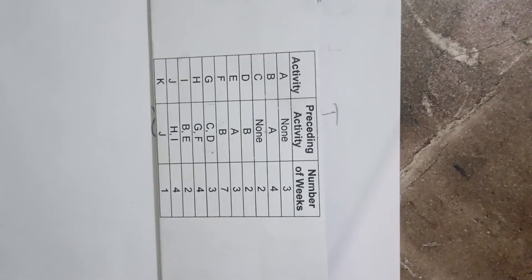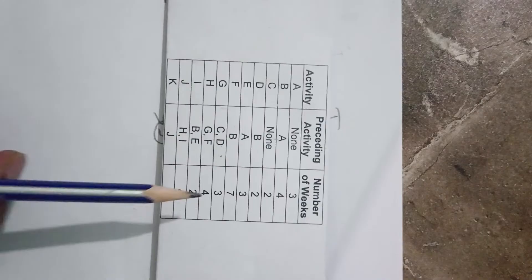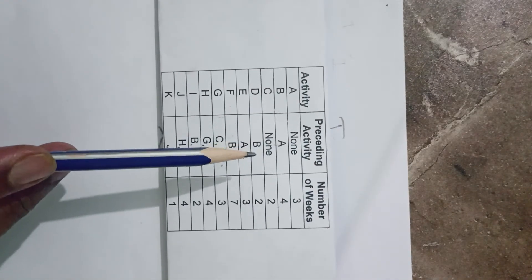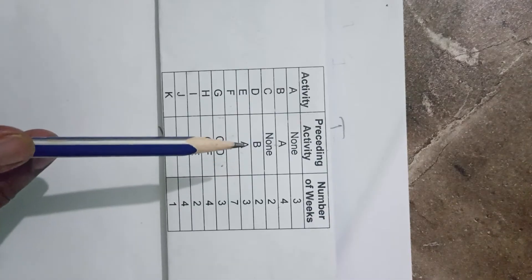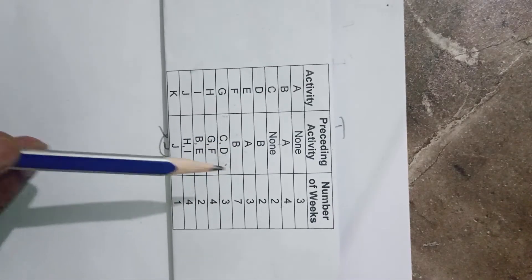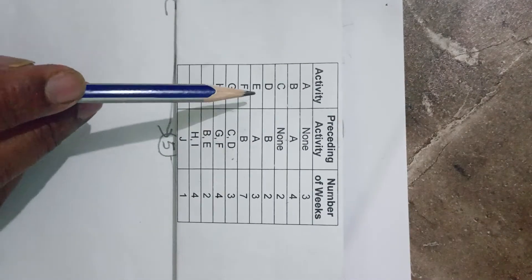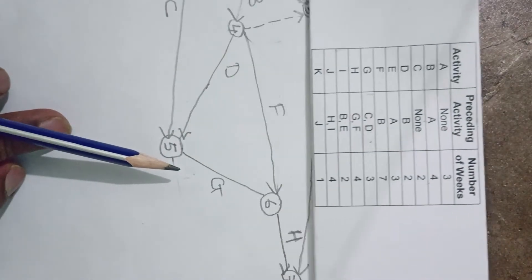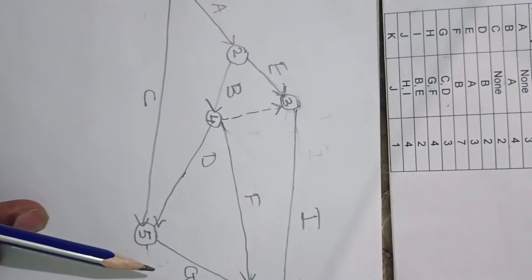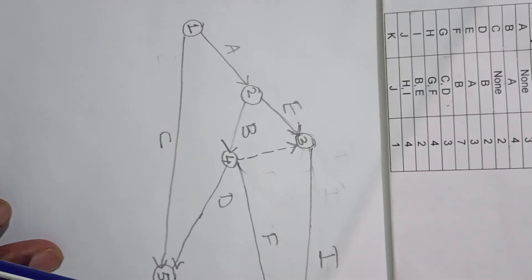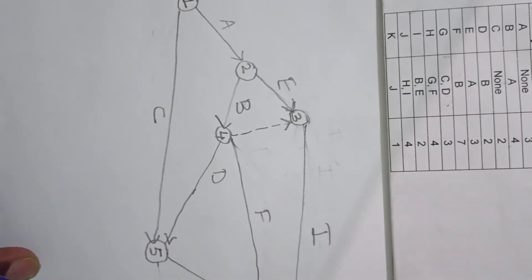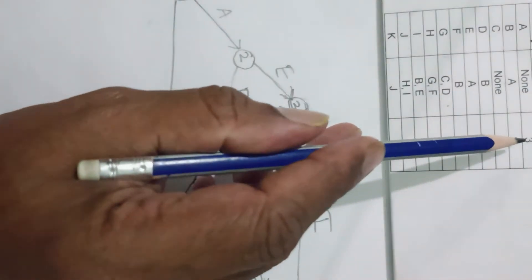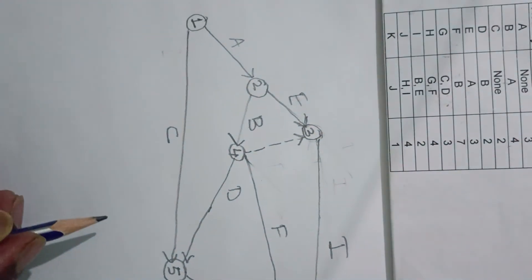In this video we are going to do the calculations for early start, early finish, late start, and late finish for the AOA diagram which we developed in our last lecture. This is our network diagram and first we will assign the number of weeks for each activity.